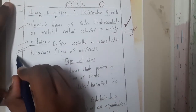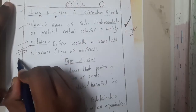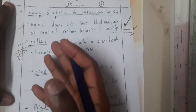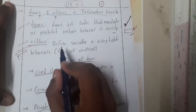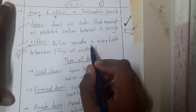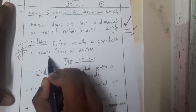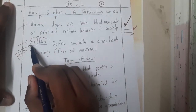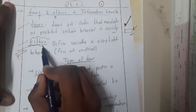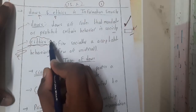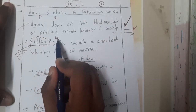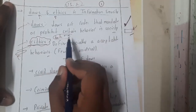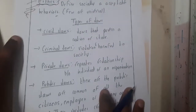Similarly, ethics is some kind of society-defined behavior. Ethics defines socially acceptable behavior. Some of you may have heard someone say 'this guy has no ethics.' Basically, ethics is a kind of behavior that is either accepted or rejected by society.